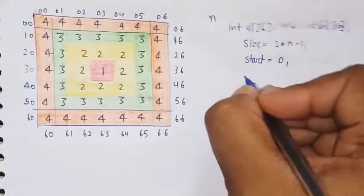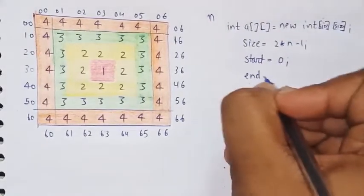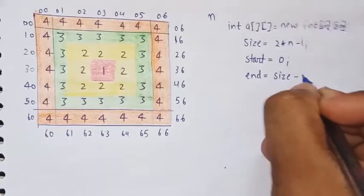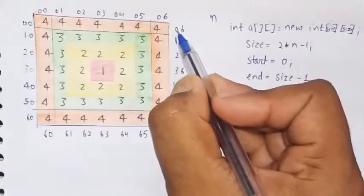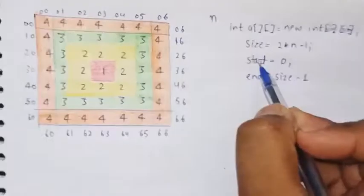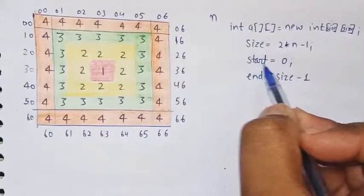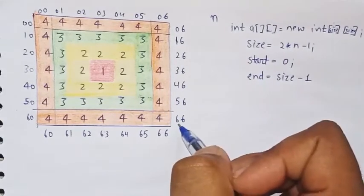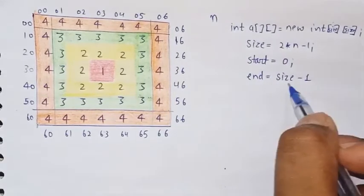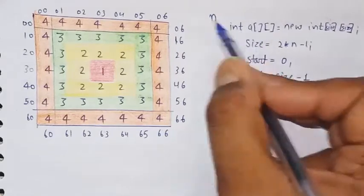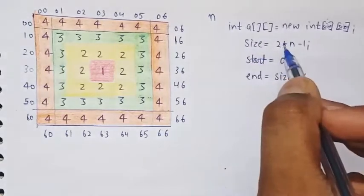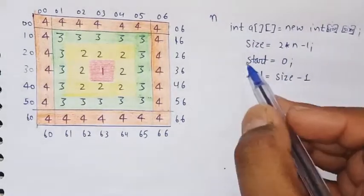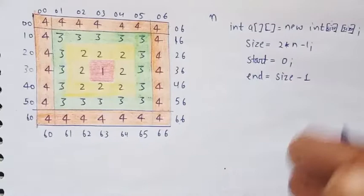Next, I will put a variable: start equals 0. And I will take end as size minus 1. When start is 0, the last index is 6 — because size is 7, so size minus 1 is 6. So end value is automatically 6. Now we will use the variable 'pattern'.